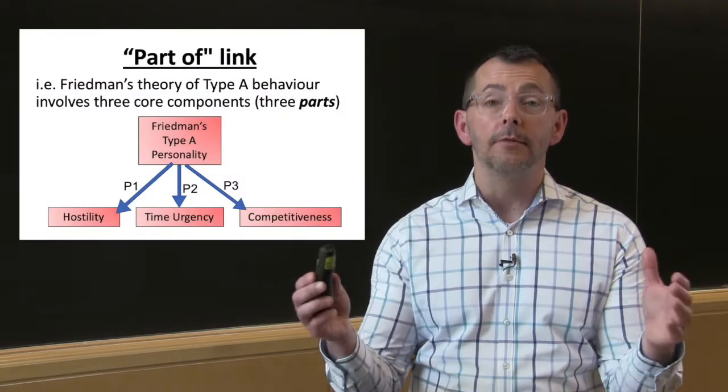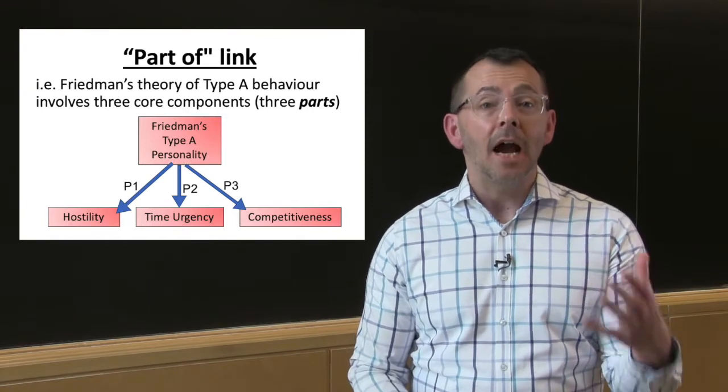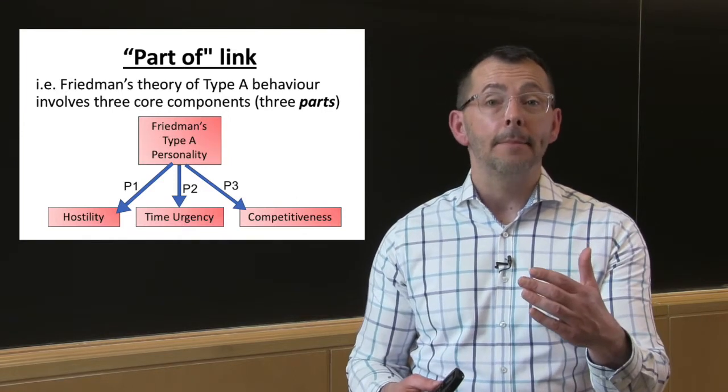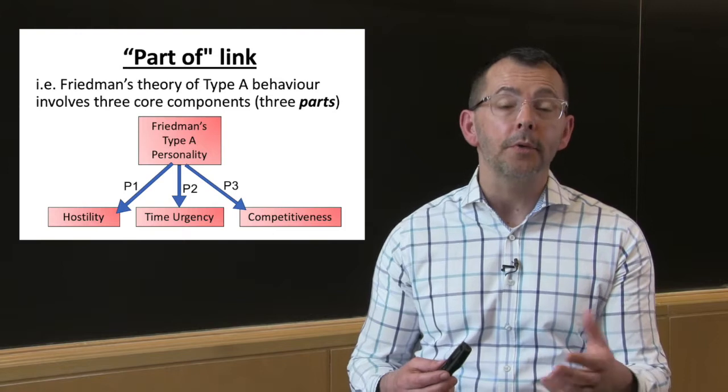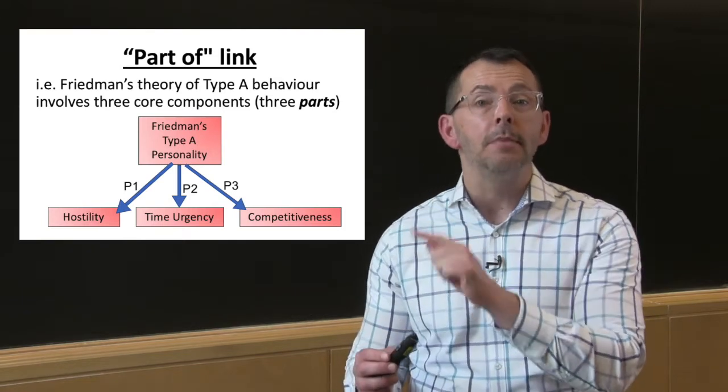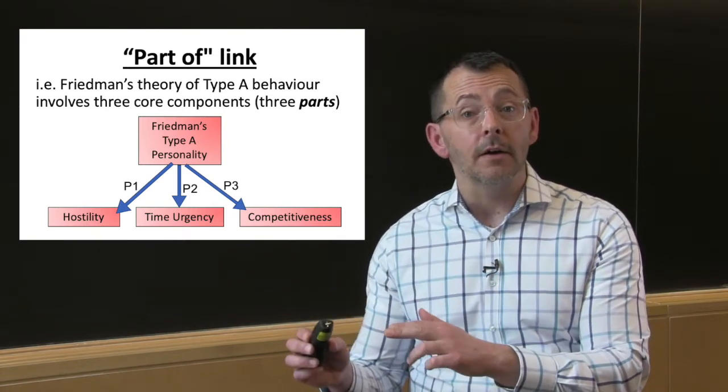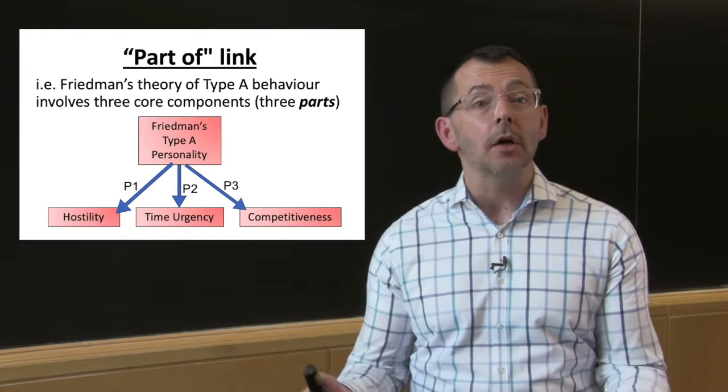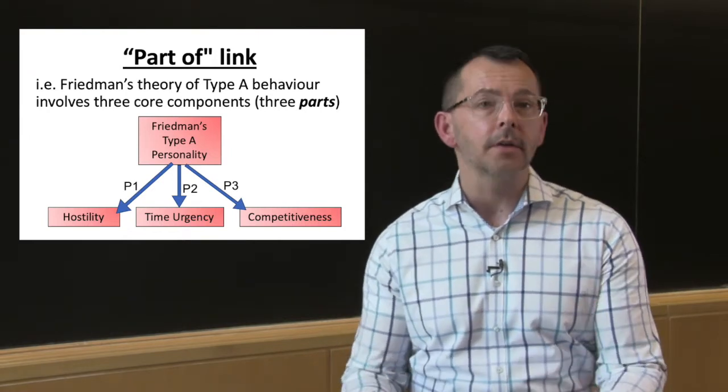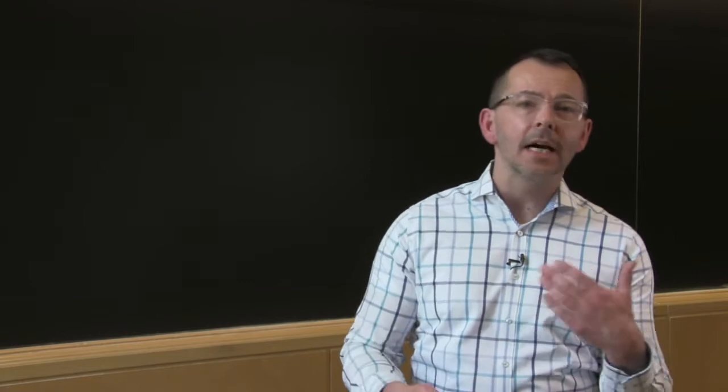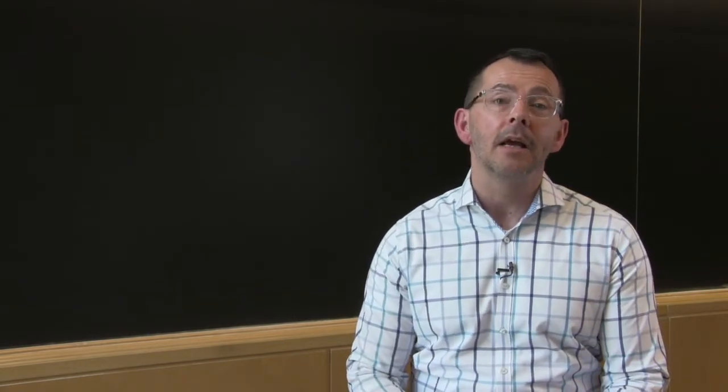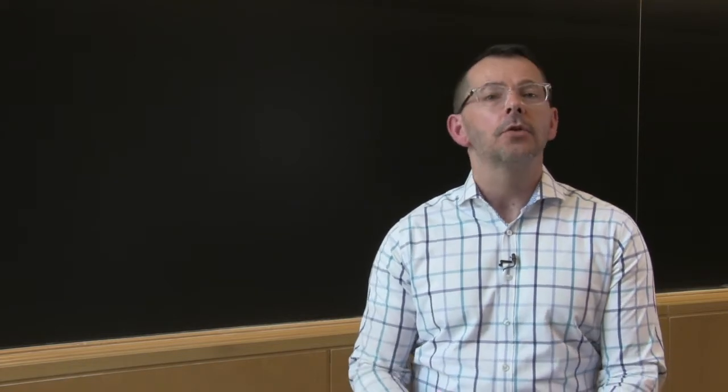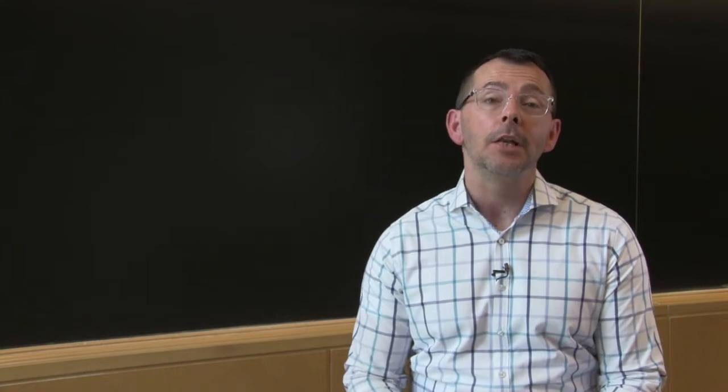We can use a part of link to indicate a hierarchy structure in the concepts. In the example here, the concept in the higher layer of the map is composed of three factors, part one, part two, part three, indicated by P1, P2, P3. The concepts in the lower layer are parts or components of the higher order concept. In this example, this personality construct has three factors or three parts. The key here is that once you get accustomed to mapping out your study notes in this sort of format, it becomes a quick way to represent additional layers of information in your notes, sort of a shorthand way for coding information in your study notes.